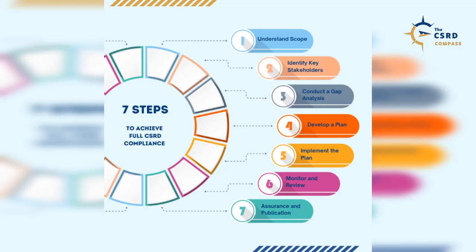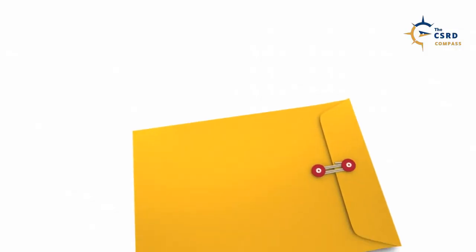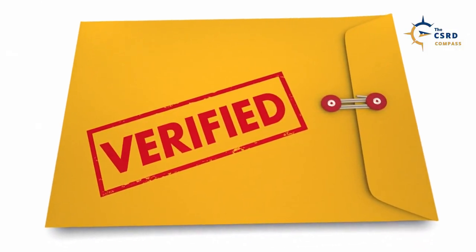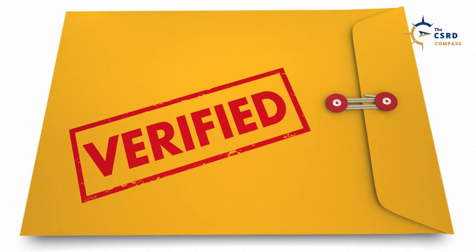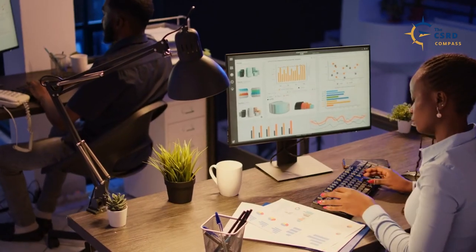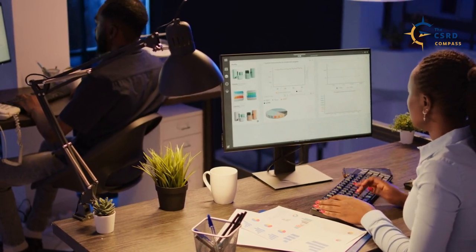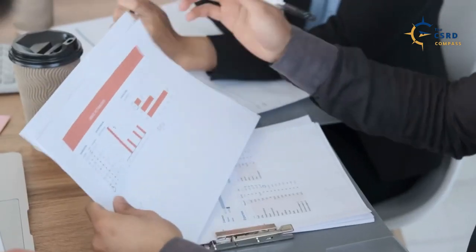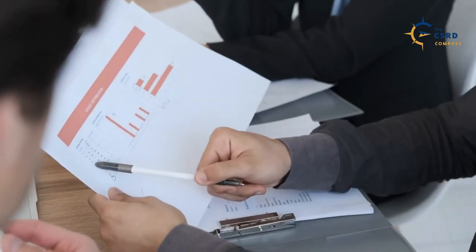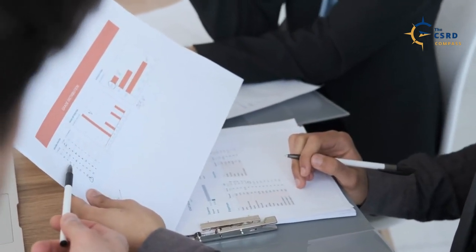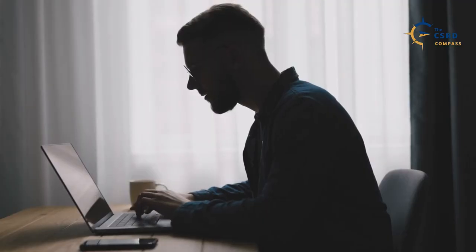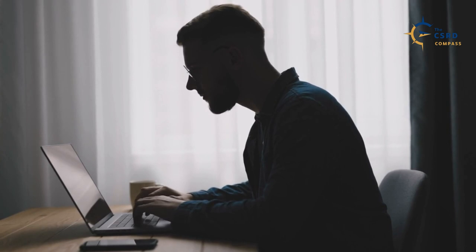Step 7: Report Assurance and Publication. It is crucial to emphasize that CSRD reports require external assurance from independent service providers. Finally, after all these steps, you're ready to compile and publish your CSRD report. Ensure that your report is clear, comprehensive, and in line with the requirements in ESRS 1, General Requirements. Don't forget to make it accessible to all relevant stakeholders, from employees to investors to the public.